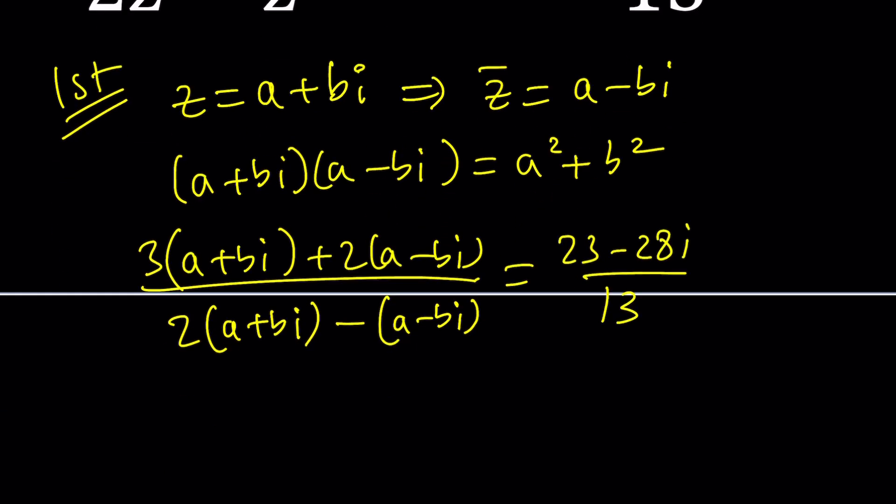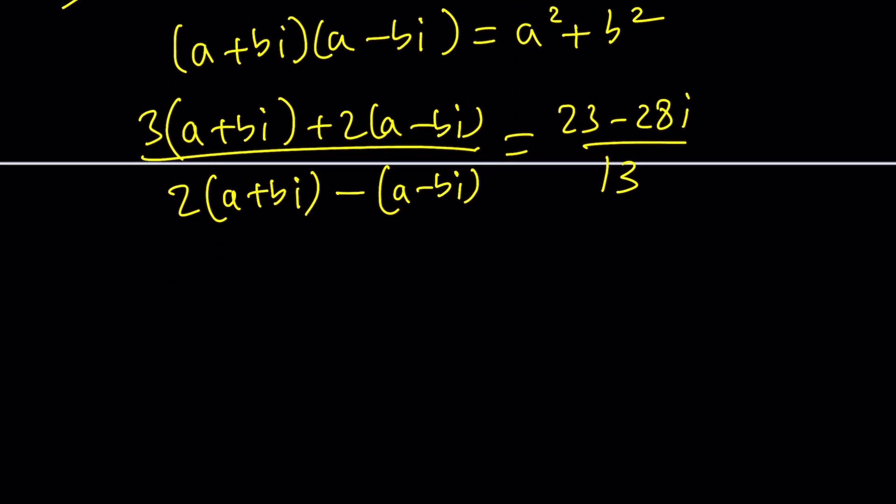How nice right? Where does that number come from? We'll see in a little bit. I'm going to go ahead and distribute and simplify 3a plus 2a for example it's going to give me 5a and 3bi minus 2bi that'll give me plus bi